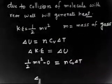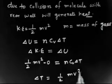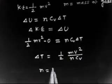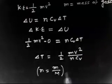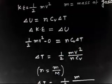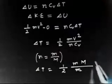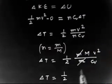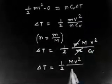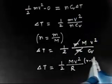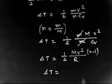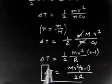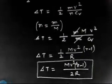We have to find ΔT. So ΔT will be half M V squared divided by N times CV. Here N is the number of moles, which is mass divided by molecular weight. Plugging this in, the mass M cancels out. Now CV can be written as R divided by (gamma minus 1). So we get delta T — the increment in temperature — equal to M V squared times (gamma minus 1) divided by 2R.